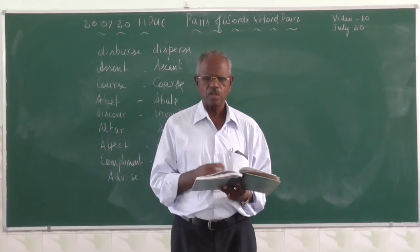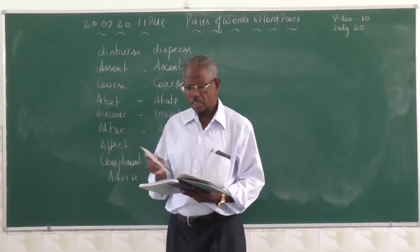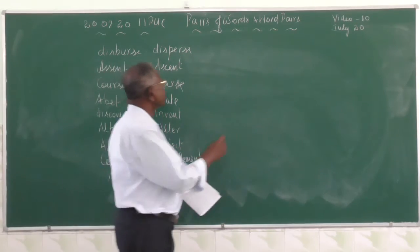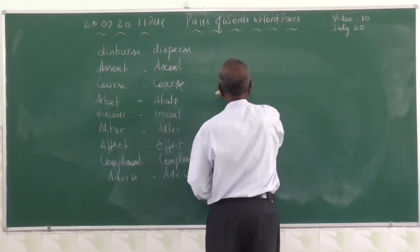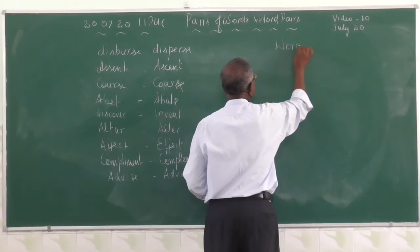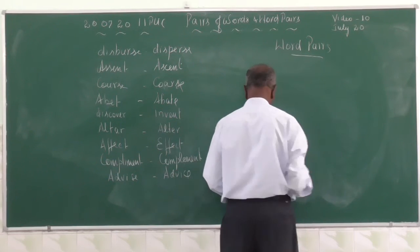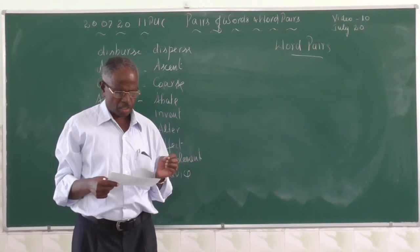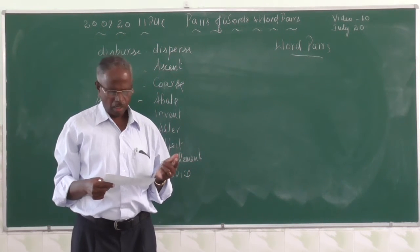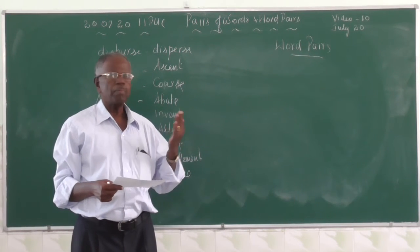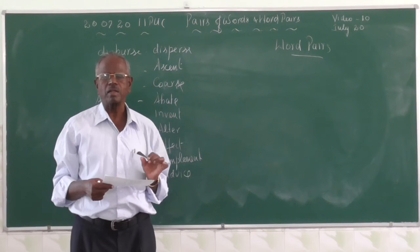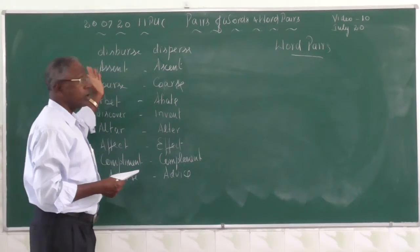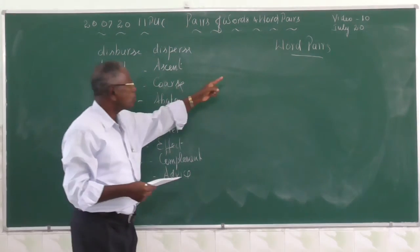Only this was given in your textbook, but there are many more words which have a similar pattern. Now I will speak something about word pairs. Pairs of words and word pairs are different things. Word pairs are usual and accepted combinations of words which cannot be reversed. For example, 'up and down' — you can't say 'down and up.' That is a special characteristic of word pairs.